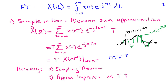As we decrease the sampling interval T or increase the sampling frequency, the quality of the Riemann sum approximation improves. If needed, we can oversample the signal. So the error induced by this Riemann sum approximation is very much under our control.